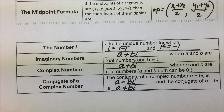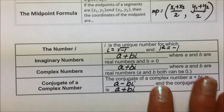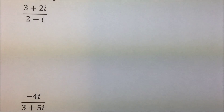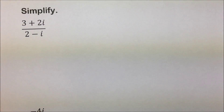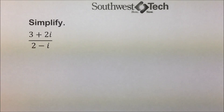Anytime we multiply conjugate complex numbers together, we will eliminate the radical, similar to rationalizing the denominator that we've done previously in this course.